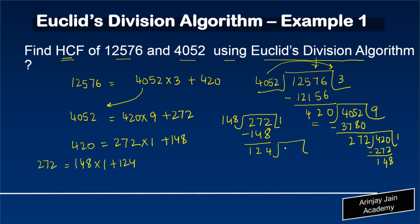Now I divide 148 by 124. It goes one time and 24 is the remainder. So: 148 = 124 × 1 + 24.